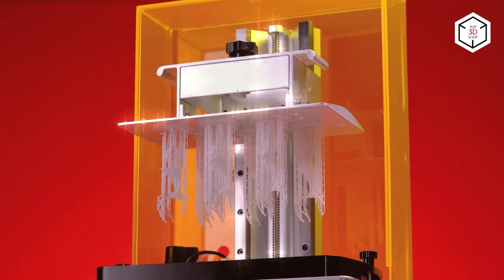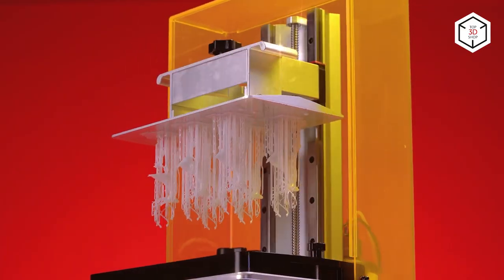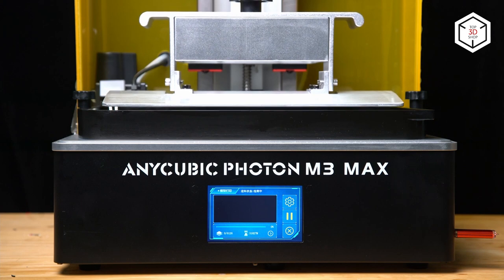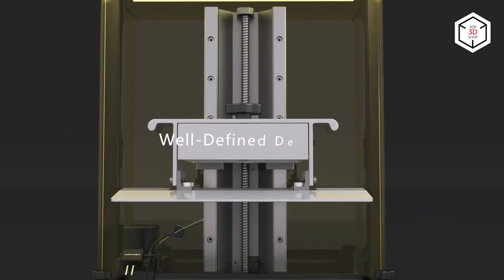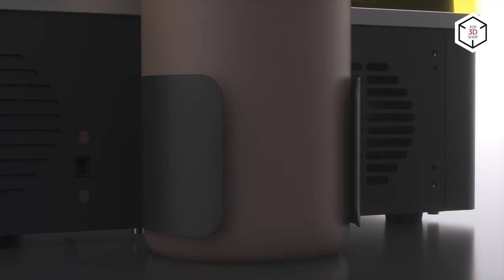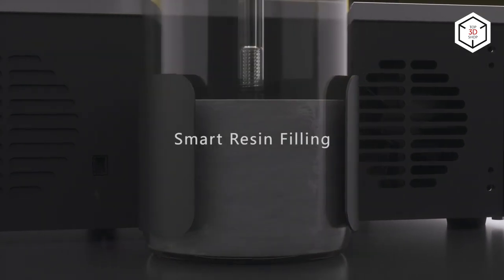Photon M3 Max features a build volume of 298 by 164 by 300 millimeters. Built-in safety functions are helpful if you are planning to use the printer at home with kids. The device offers a number of convenient features such as Wi-Fi connection and remote control.